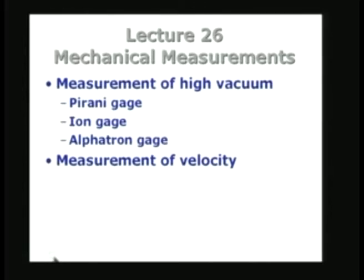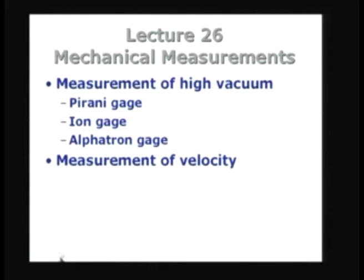Let us look at the measurement of high vacuum. The Pirani gauge principle is very simple. If you have an electrically heated element, the amount of heat transferred from that element is related to the speed with which it can be carried away by the surrounding fluid. As the surrounding fluid pressure reduces, the amount of heat it can take away also reduces. Therefore, if you heat an element in the presence of background vacuum pressure, as the pressure reduces, the temperature of the element will increase.